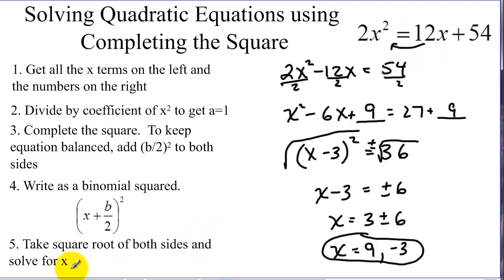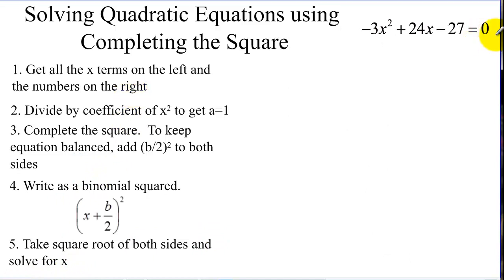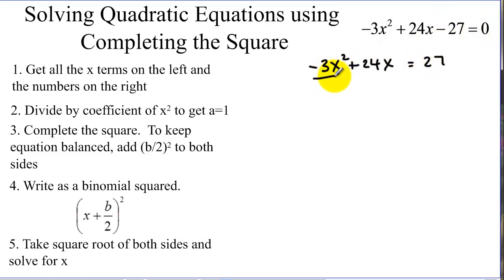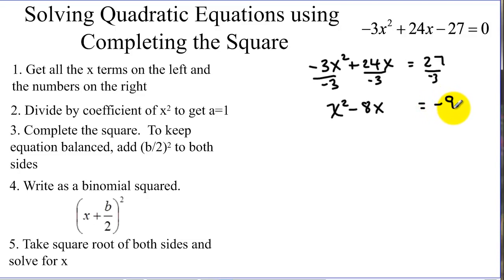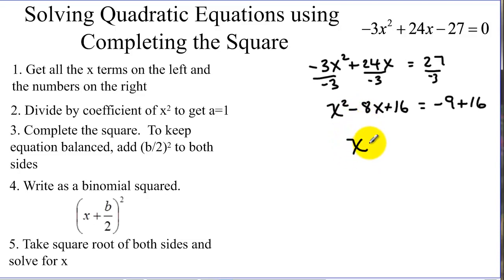Let's look at one last example — same process, just a new quadratic. Our first step, we want to get x squared terms on one side and constants on the other. So I added the 27, then we're going to divide by negative 3. Now I have x squared minus 8x, and I'm going to leave myself room for completing the square. We take half of negative 8, which is negative 4, and square it — negative 4 squared is positive 16. This will always be positive. I have to add the same to both sides to keep it balanced.